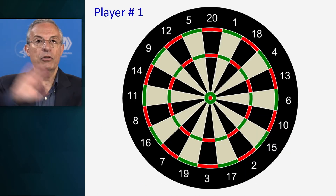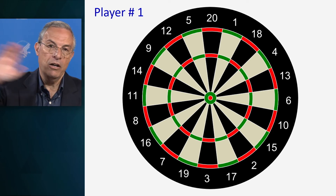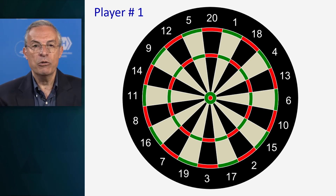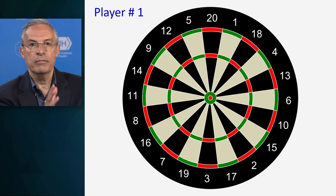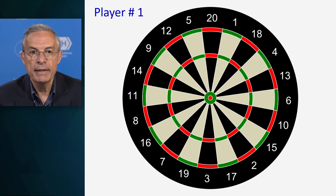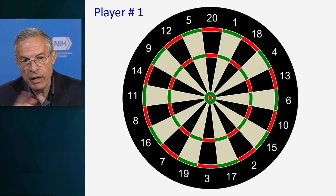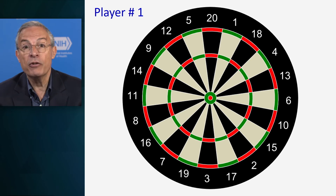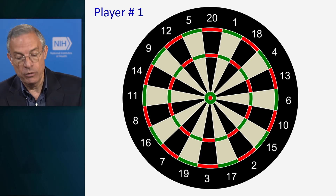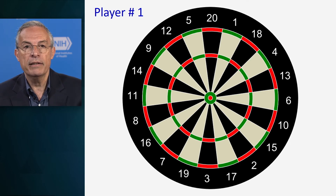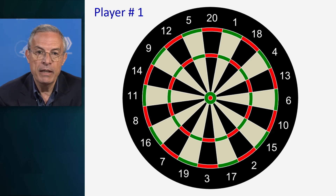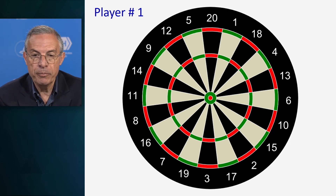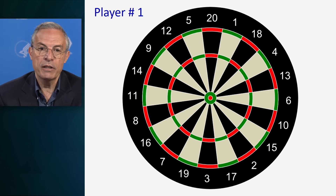That's for superiority, non-inferiority, and equivalence tests. Now I want to switch to a completely different topic: multiplicity adjustment. The first time I heard this analogy with the dartboard is from Michael Proshan, who is also a biostatistician at NIH. He made this analogy connecting the dartboard game with multiplicity adjustment.